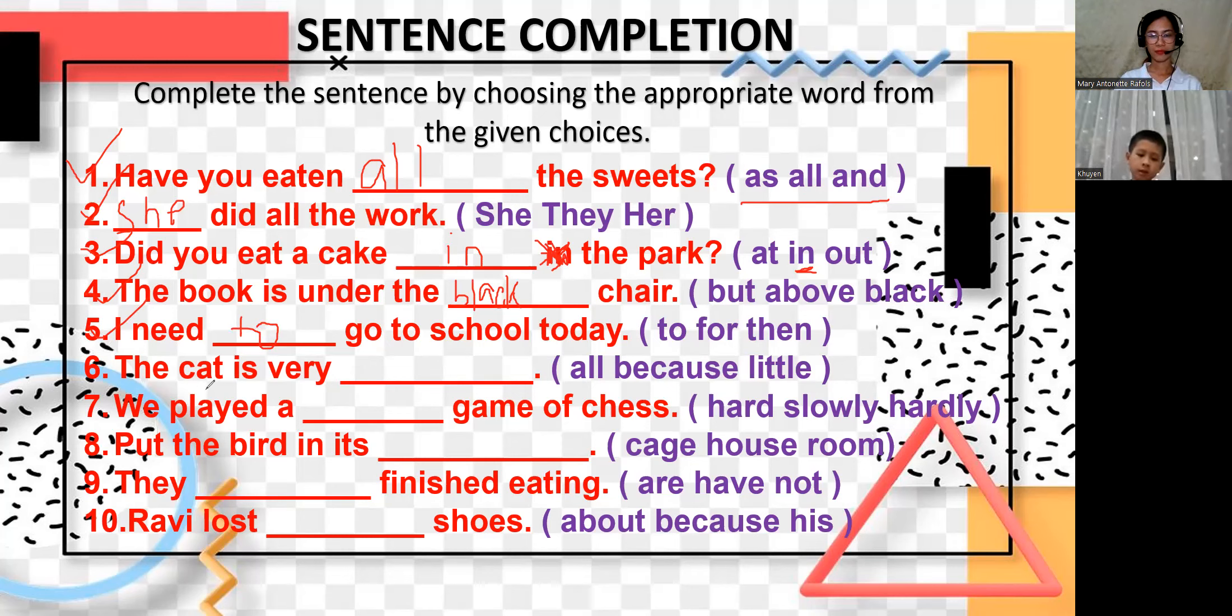Now let's go to six. The cat is very little. Little, yes. The cat is very little. Yes. Now let's go to seven. I think it's hard. Okay, it's hard. Before that, let's read this word. Hard is correct. We played a hard game of chess. Do you love playing chess? Yes.